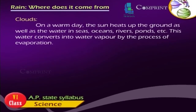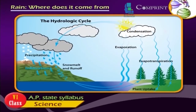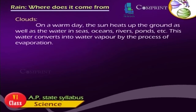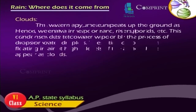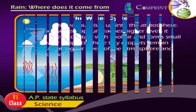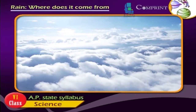Clouds: On a warm day, the sun heats up the ground as well as the water in seas, oceans, rivers, ponds, etc. This water converts into water vapour by evaporation. The water vapour rises up into the atmosphere, and when it reaches higher levels, it condenses due to contact with cool air and forms small water droplets. These tiny droplets remain floating in the air at higher levels and appear as clouds.